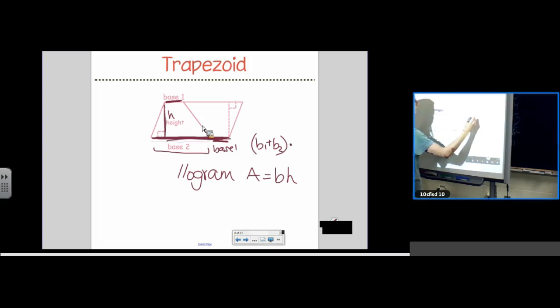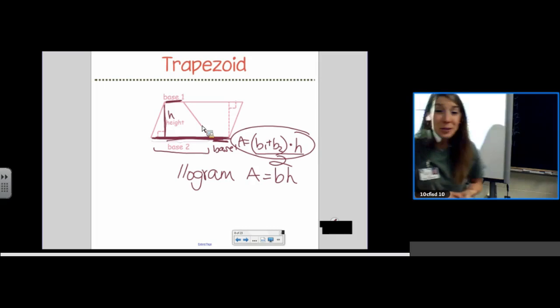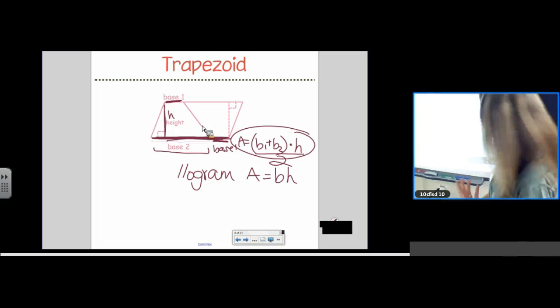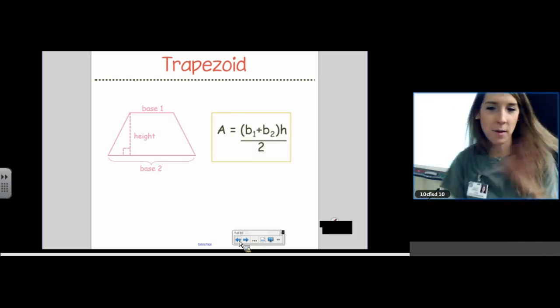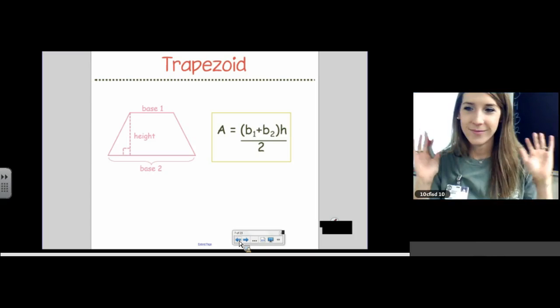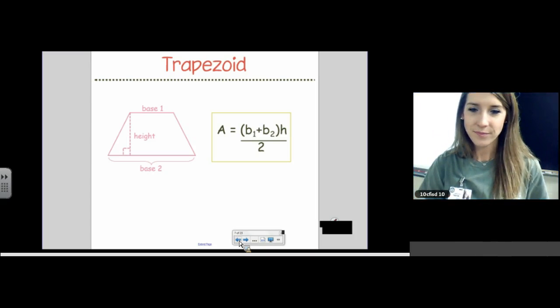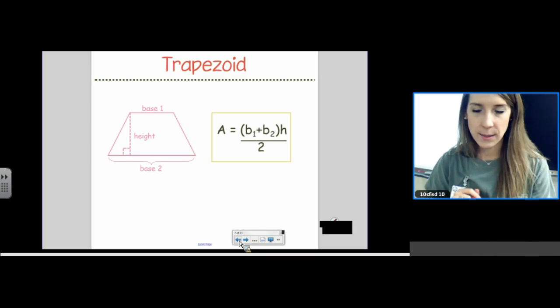And, then we do times the height. That's the area of the parallelogram. But, I doubled my trapezoid. So, I need to undo that. So, I divide by 2. And, that's where the formula comes from. That may or may not have made sense to you. If it didn't, just roll with it. Okay. Let's try some trapezoid problems.